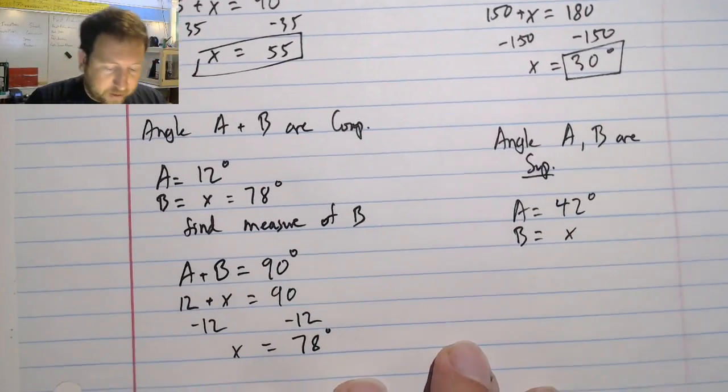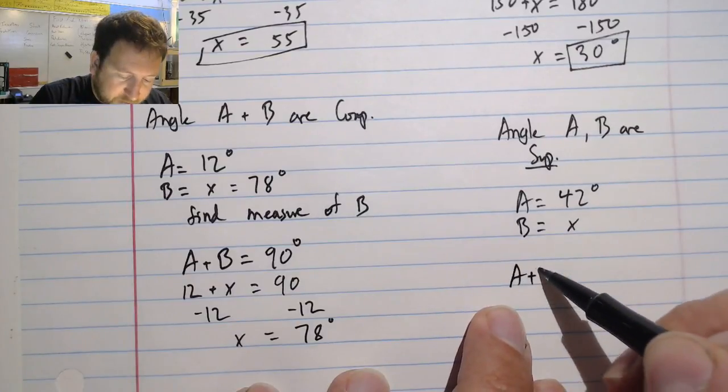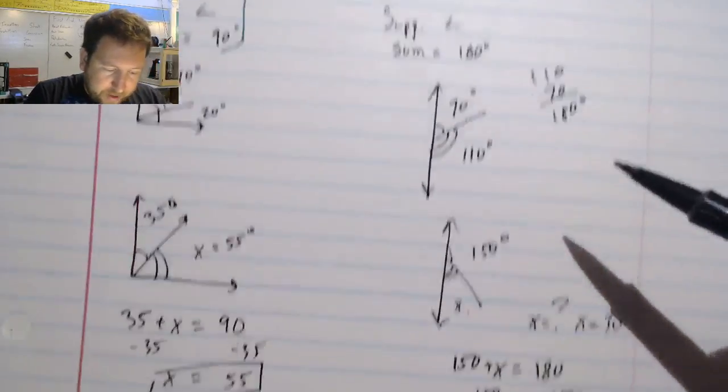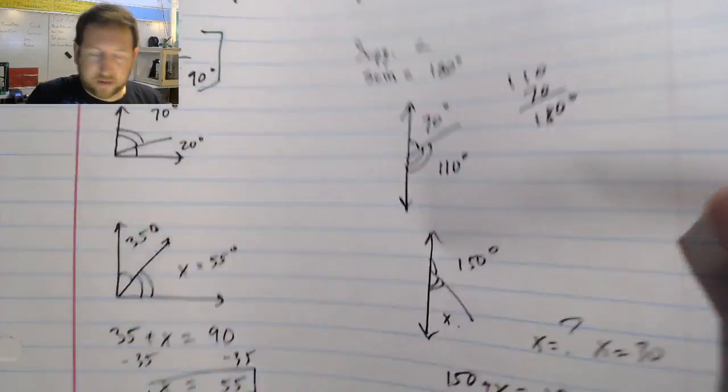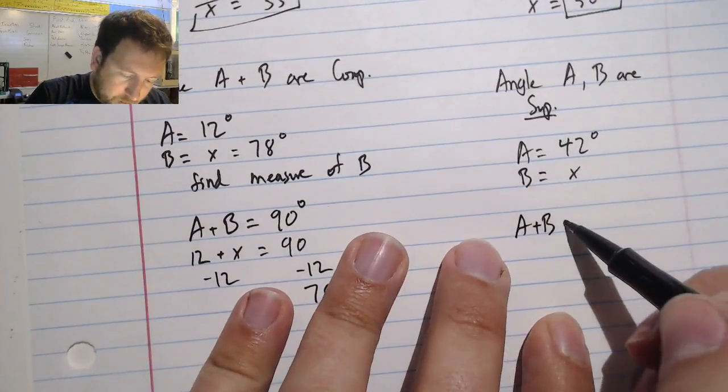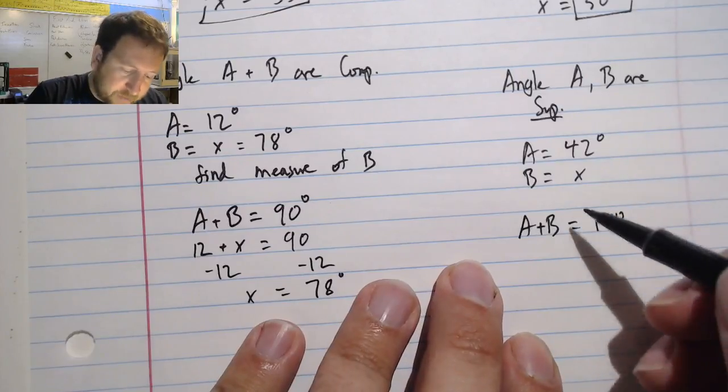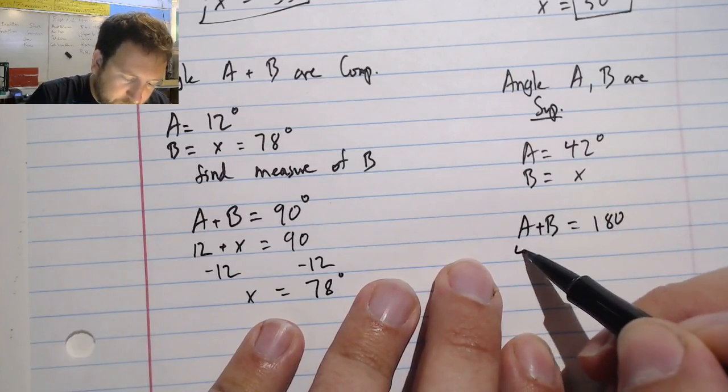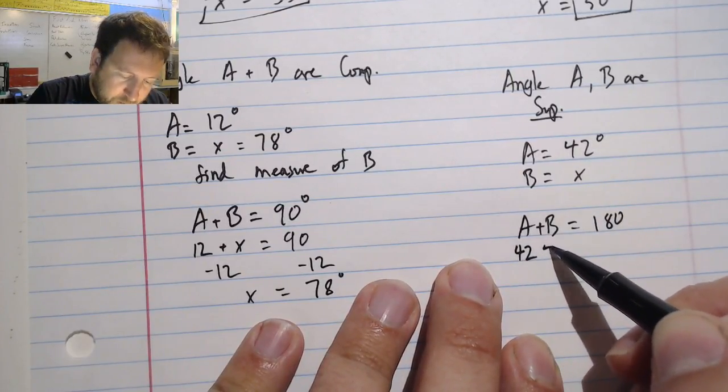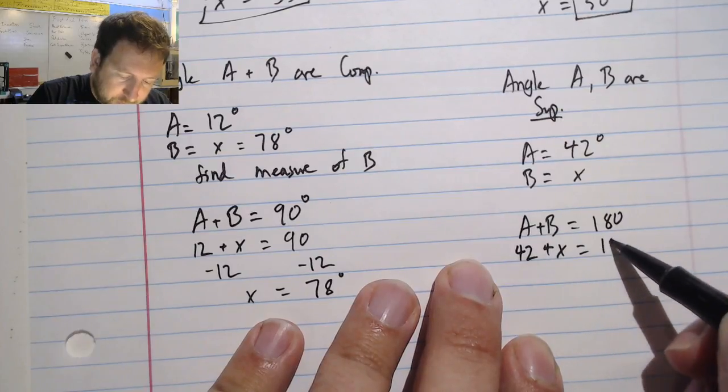Well, we can solve this using algebra really quickly like we did before. I can say that A plus B, since they're supplementary, supplementary means the sum is 180. So I can say that if I add them together, I get 180. Well, I'm going to substitute what I have in. A is 42. Plus x equals 180.